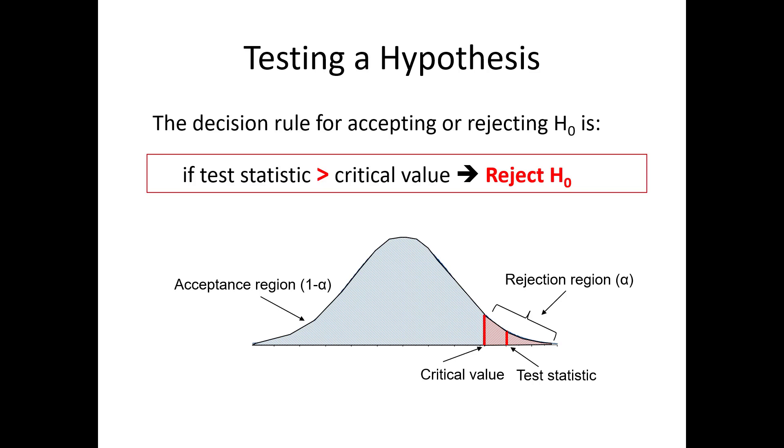As you go from left to right, the value of the test statistic increases. If the value crosses a cutoff, which is the critical value, the test statistic will lie in the rejection region. That is, it will exceed the value that you would see if the null hypothesis were true. That would be a reason for you to reject the null.